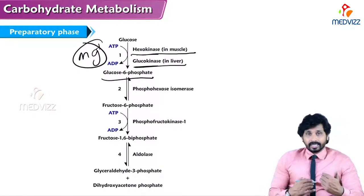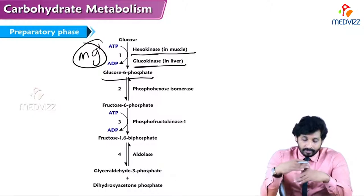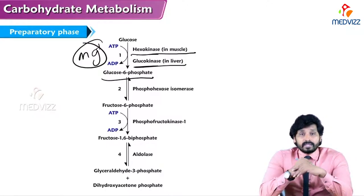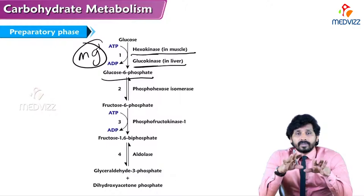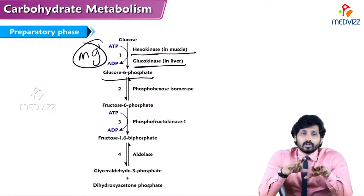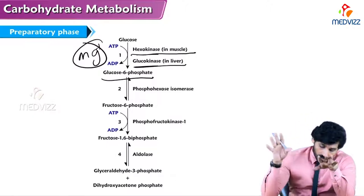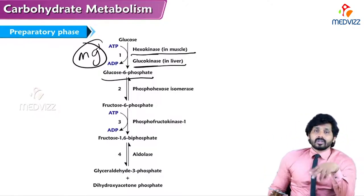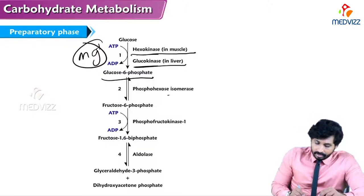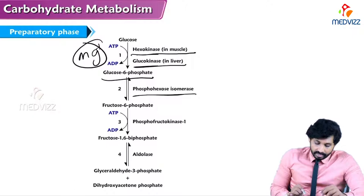In the second step, glucose-6-phosphate is converted to fructose-6-phosphate by the enzyme phosphohexose isomerase. The difference between glucose and fructose is the functional group — the aldehyde form is converted to the keto form. This is an isomerization where structural changes occur within the molecule.